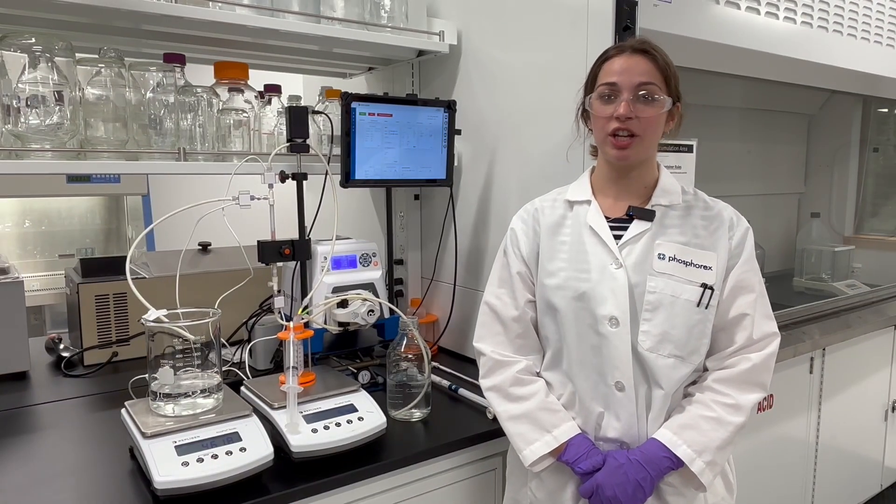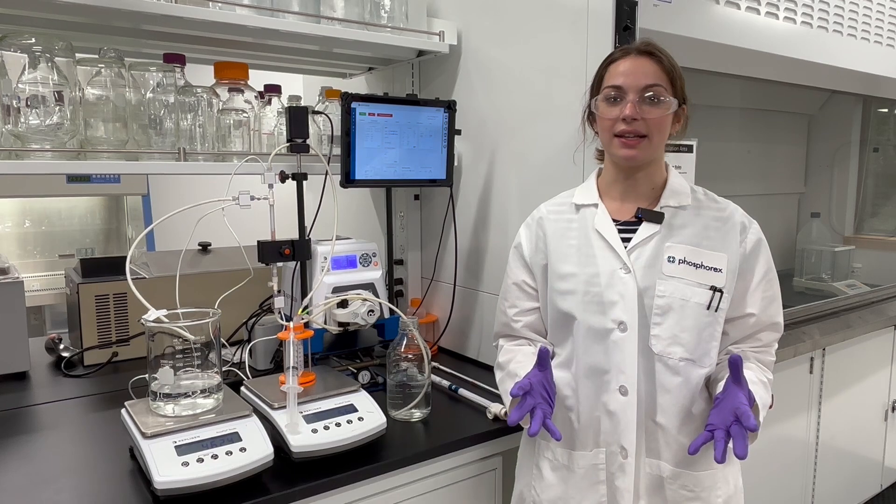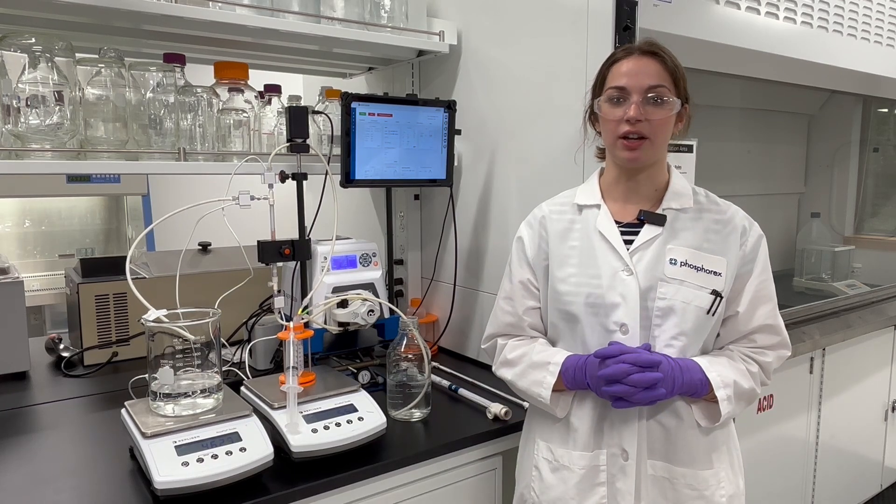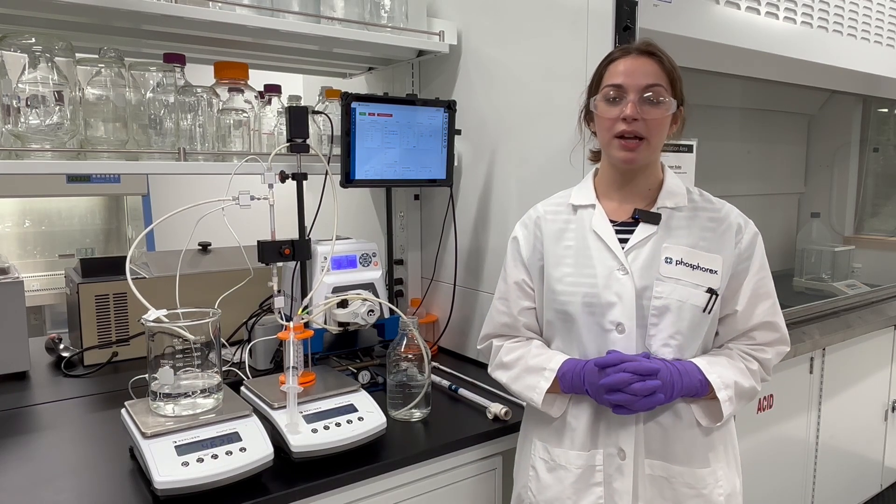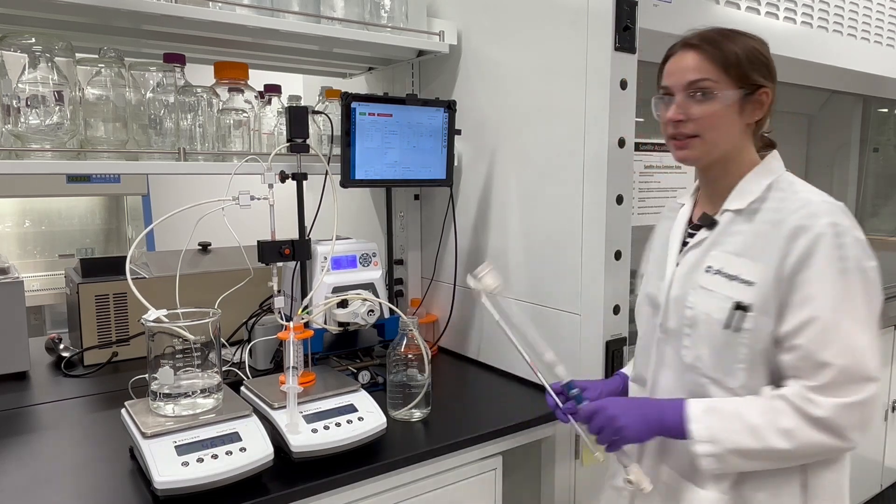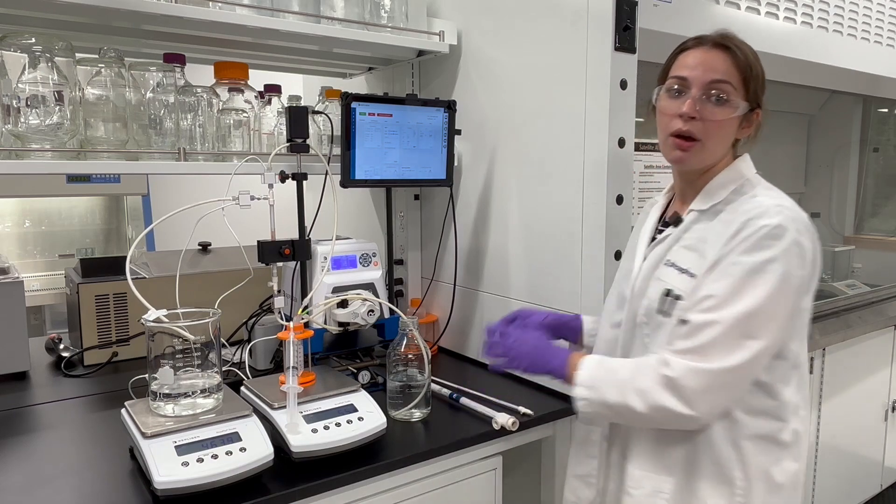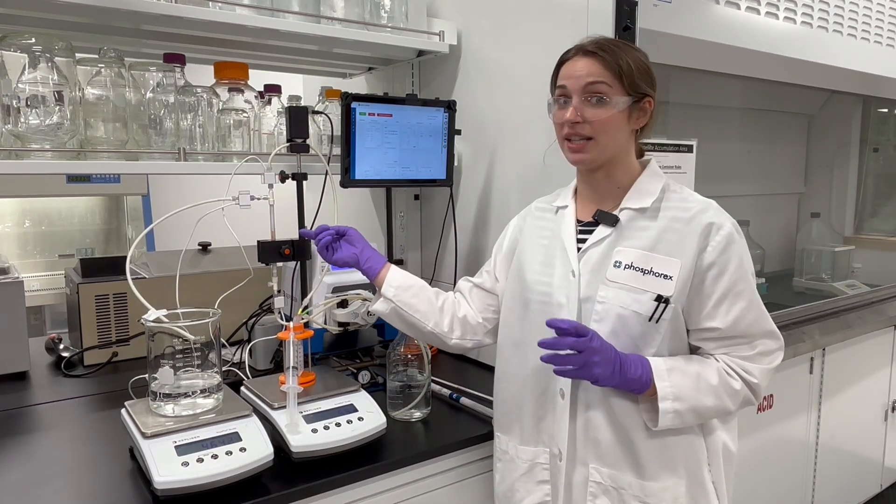With the optimal concentration, TMP, and flow rate now identified, column loading is assessed to determine the optimal column surface area for the batch scale, which can minimize the cost of larger hollow fiber TFF columns that have a greater surface area, such as these, if a higher column loading can be achieved on a smaller, more cost-efficient column, such as this one.